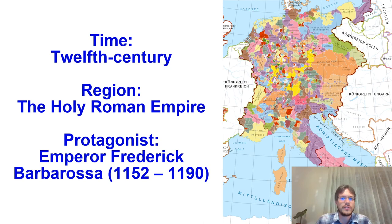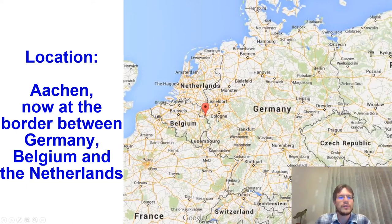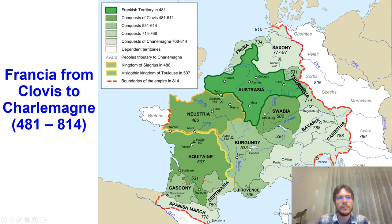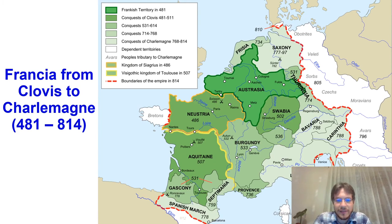We will see exactly why this could be, and why this is or is not true. The location is Aachen, now at the border between Germany, Belgium, and the Netherlands. Aachen is historically very relevant, located in the heart of Austrasia, one of the main parts of the Frankish kingdoms.